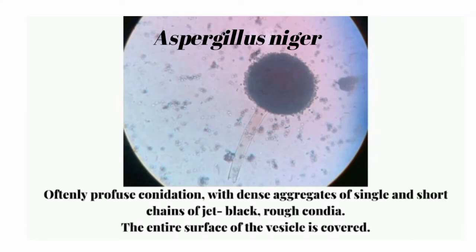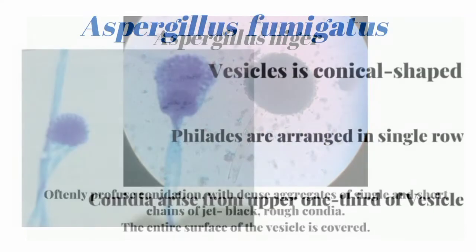Next one is Aspergillus niger. Microscopically, the vesicle is globular shaped. Phialides are in two rows. Conidia arise from the entire vesicle, and the conidia are black in color.